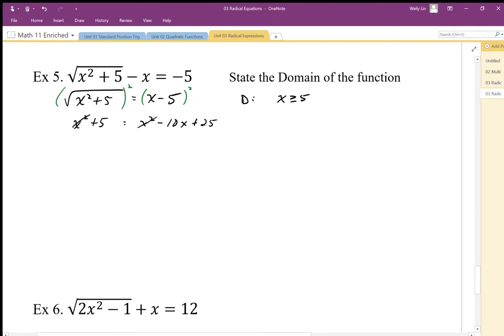The x squareds cancel. Since there's not a quadratic anymore, I'm going to move the 10x to this side, so plus 10x on both sides, subtract 5 from both sides, and I end up with x equals positive 2.